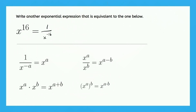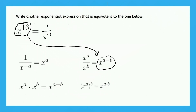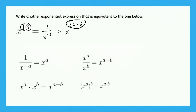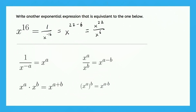Let's try to make another. Now let's think of x to the power of 16 in terms of this property right here, and we're going to look at x to the 16 as if it is x to the a minus b. So, the question is, what minus what will give us 16? There are infinite possibilities. But let's just say 22 minus 6. x to the 22 minus 6 is the same as saying x to the 16. We could even convert that again to a fraction, which would be x to the 22 over x to the 6, because 22 minus 6 is still 16.